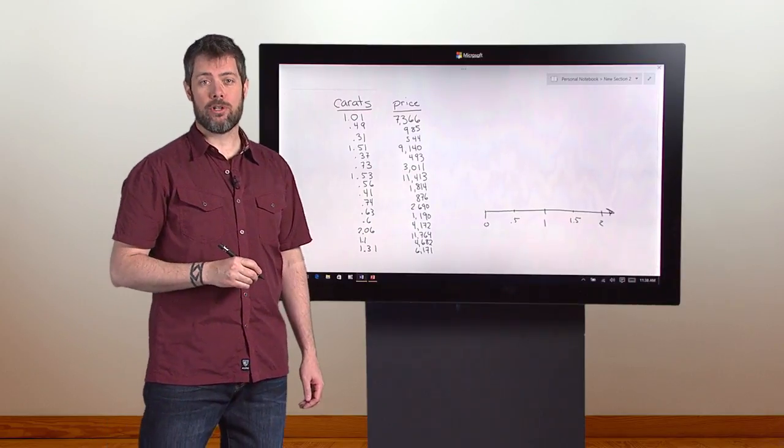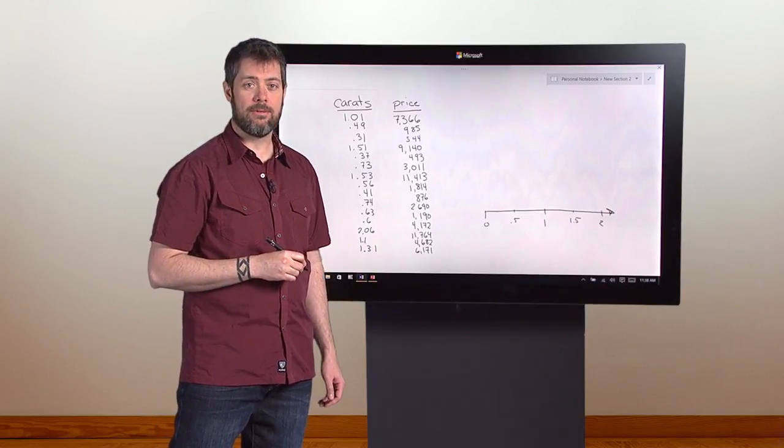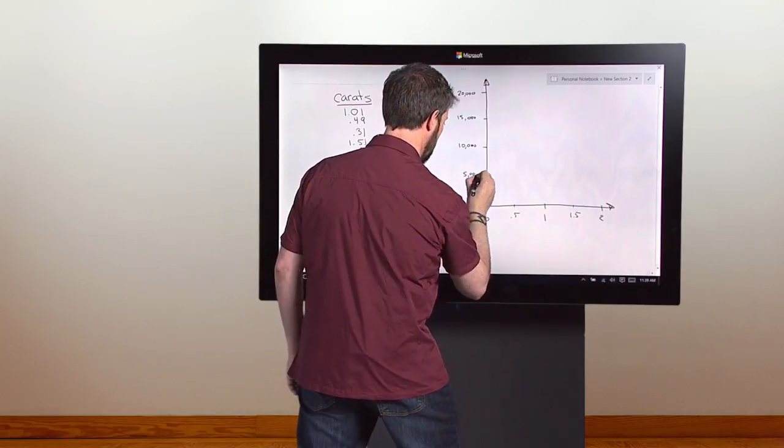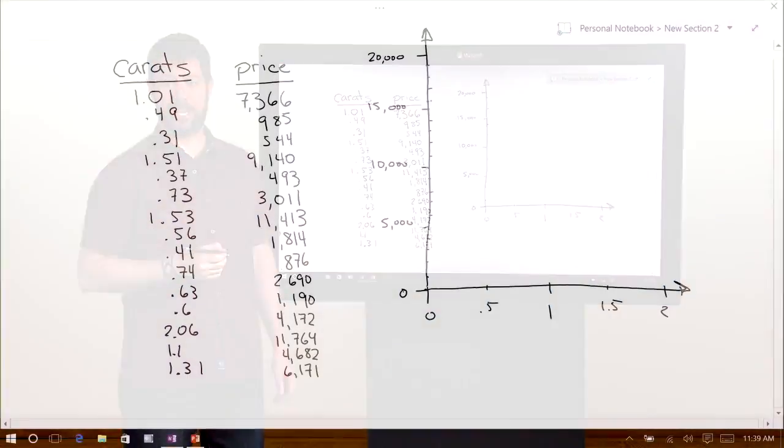Next, we'll draw a vertical axis to record the price and connect it to the horizontal weight axis. This will be in units of dollars. Now we have a set of coordinate axes.